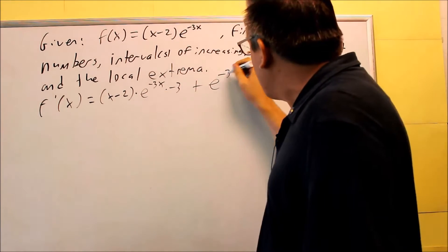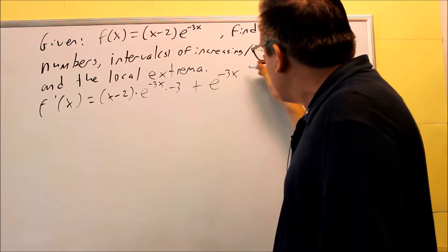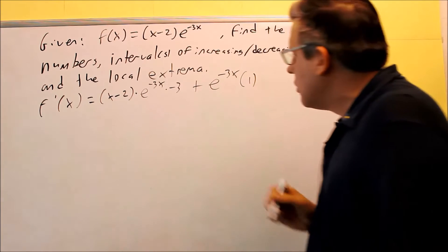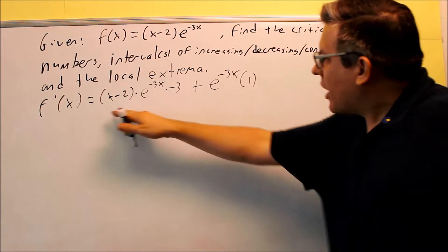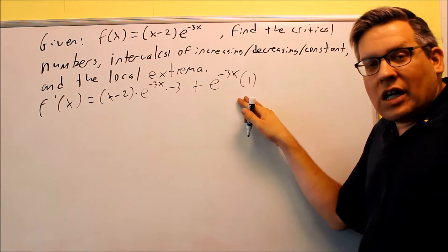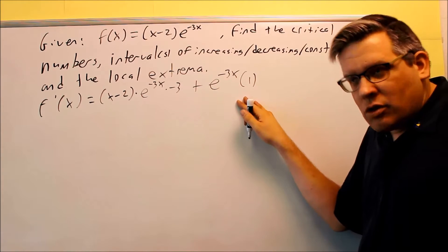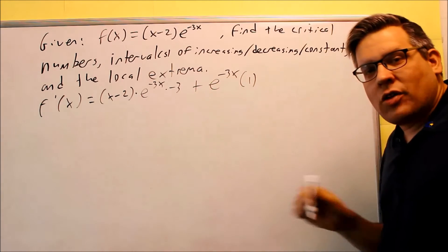Plus the second piece, e to the negative 3x, and then times the derivative of the first, which is going to be 1 in this case. So now we're going to take all this, and eventually we're going to have to set this equal to 0. So it's probably better for us to simplify this by factoring.